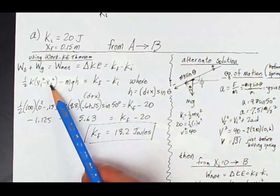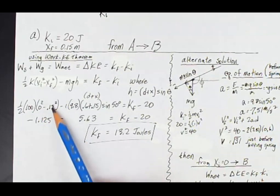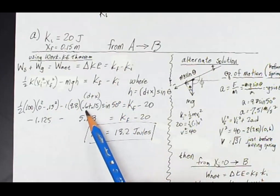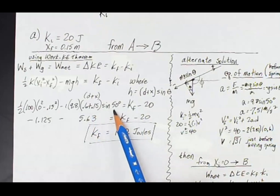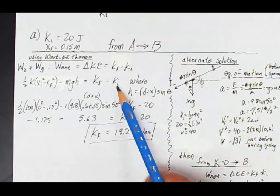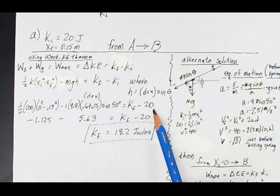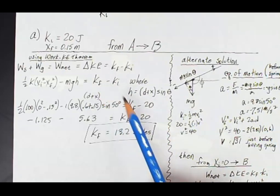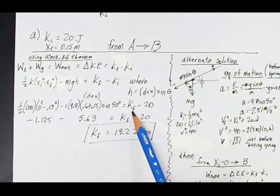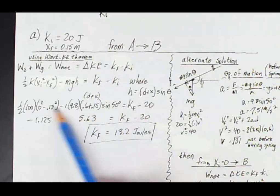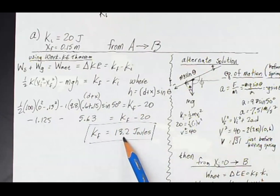The spring starts out not being compressed at all, and then at my position B, the final position, it is compressed by 15 centimeters. d is 0.6, x is 0.15, the angle is 50 degrees. At the initial position, I have 20 joules of kinetic energy. At the final position, that is what I'm trying to find. So kf is my only unknown in that equation. I can solve for kf, and I get 13.2 joules.